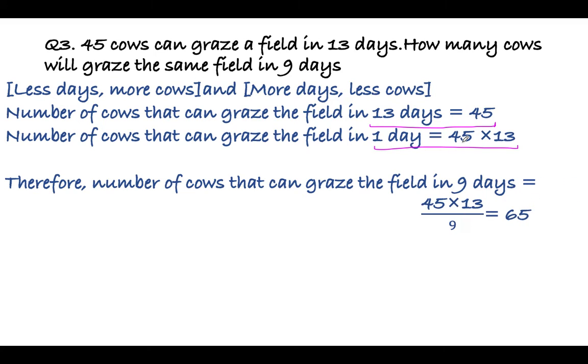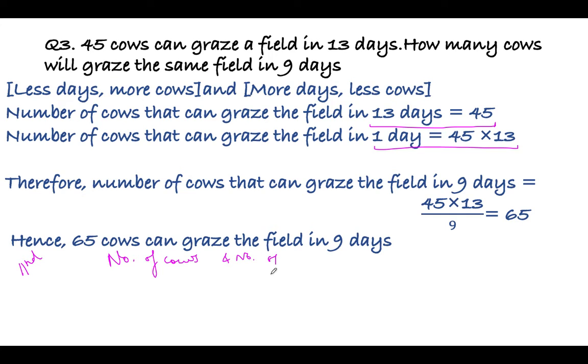The number of cows that can graze the field in nine days will be 45 × 13 ÷ 9, that is 65. So 65 cows can graze the field in nine days. You can draw the table also, you can use the second method. Then you will need to draw the table between number of cows and number of days, and then keep the unknown quantity x and solve.